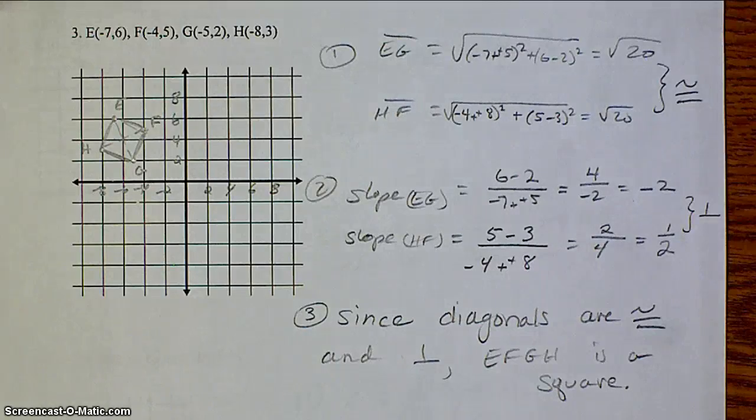These three examples are called coordinate proofs. It's a way of proving that a quadrilateral is a special quad by using formulas and geometry on the coordinate plane. Hopefully, this helped you out. If not, please come and see me so you can set up some extra help days. Thanks so much. Bye.